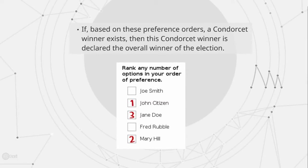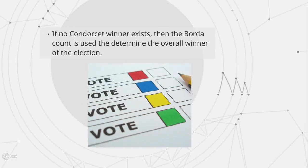Based on these preference orders, we're going to first look through and see if there is a Condorcet winner. A Condorcet winner is a candidate that would win in a head-to-head contest between every other candidate in the election. If there isn't a Condorcet winner — and we've seen several examples of elections in class where there weren't — the Borda count, which we've talked about several times, is then a follow-up to determine who wins if there's not a Condorcet winner.